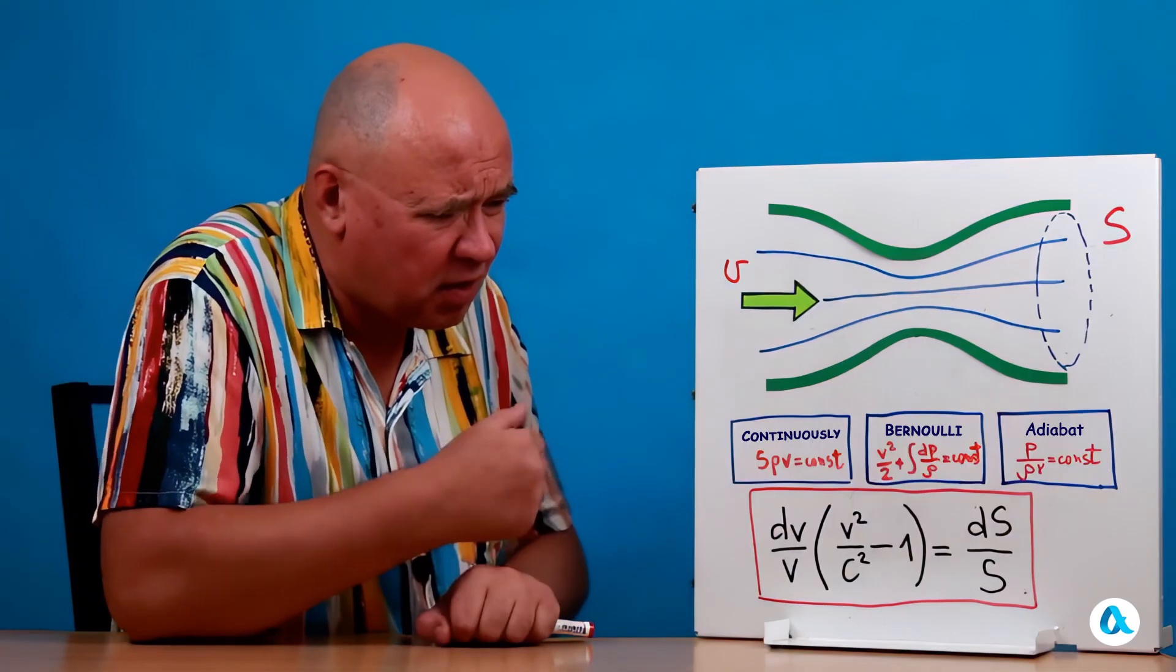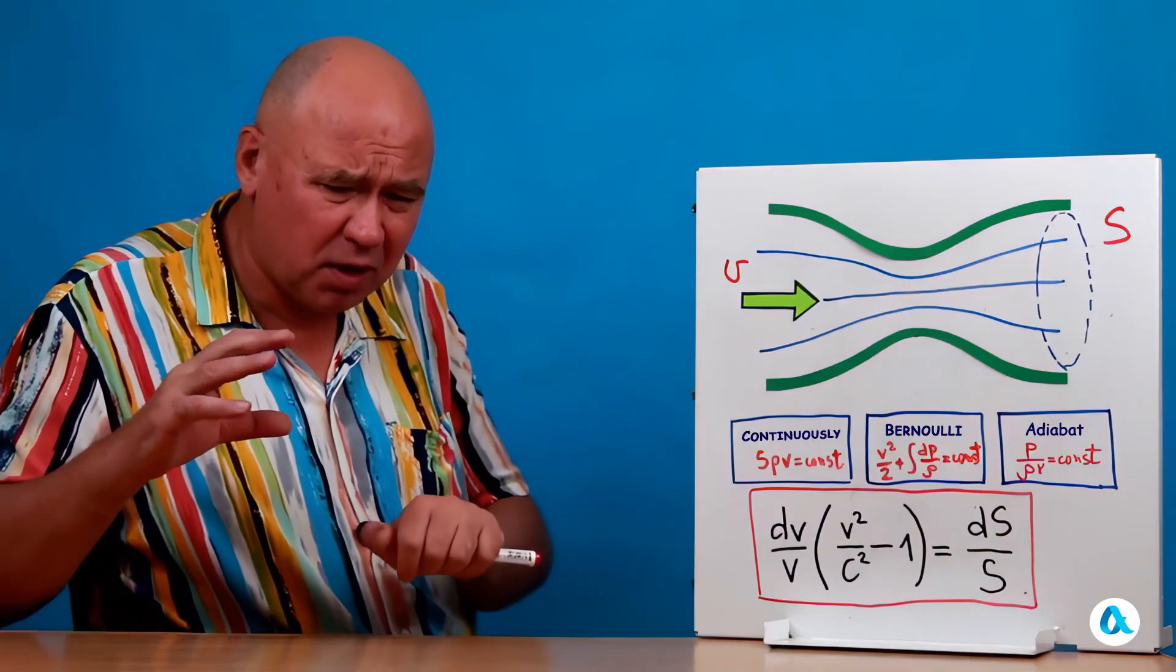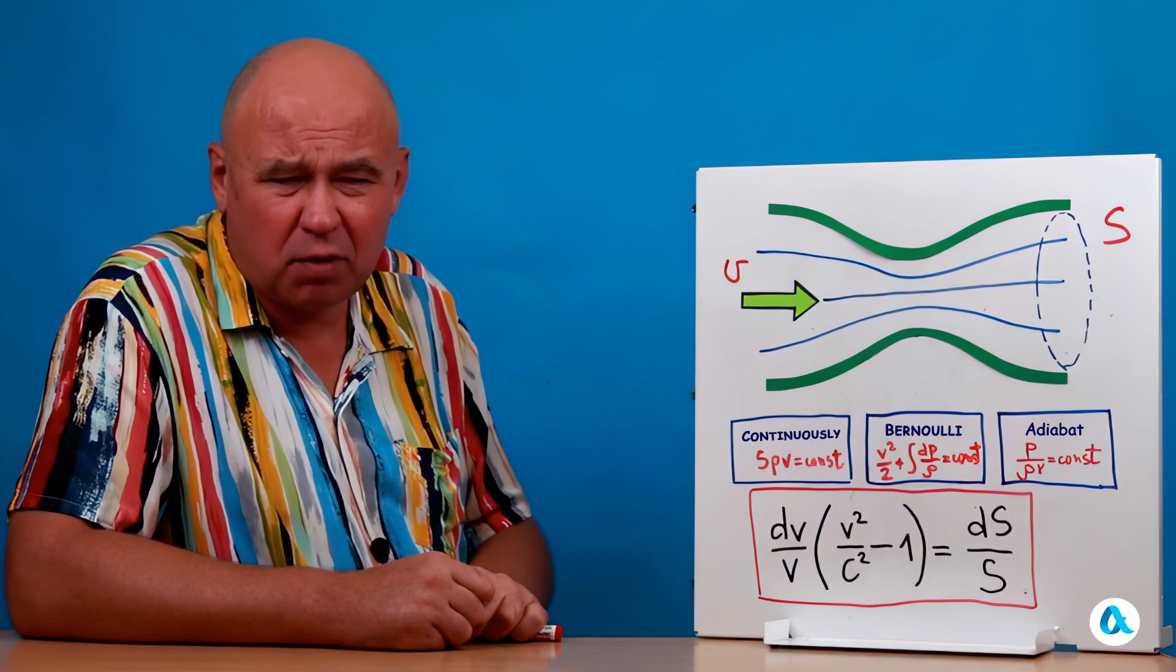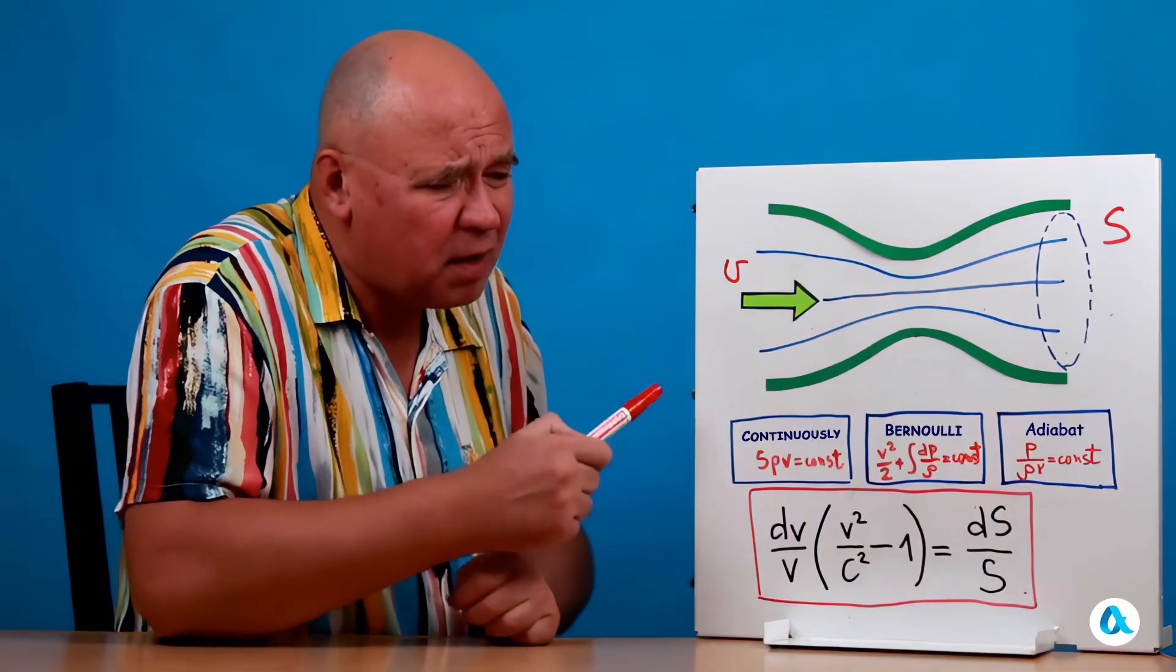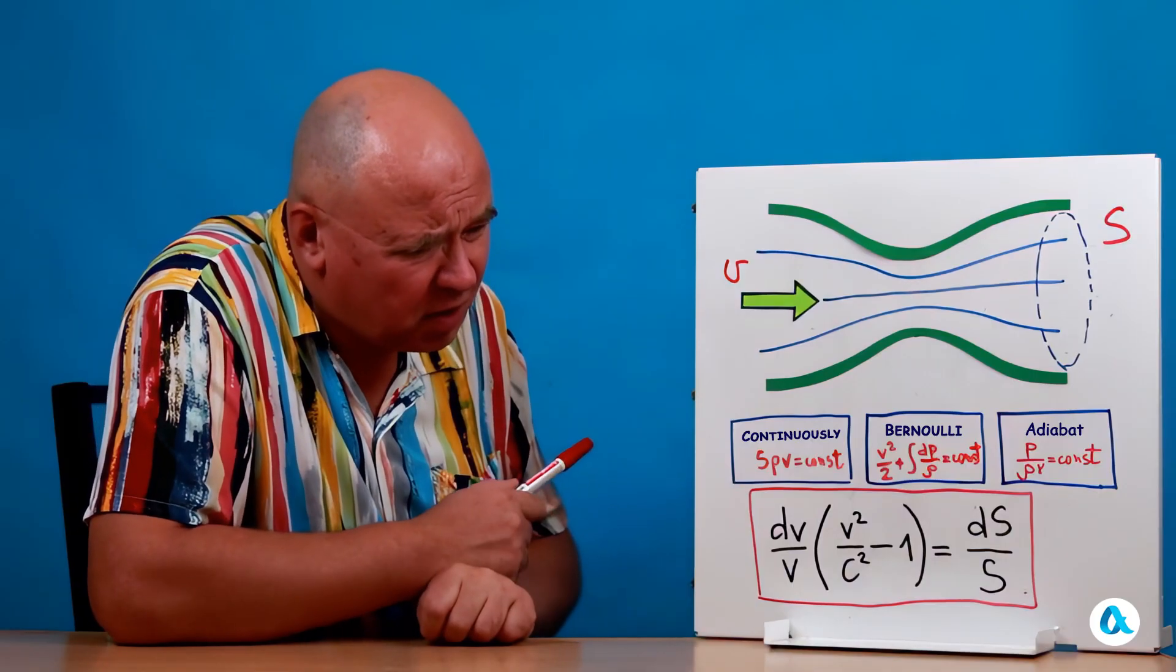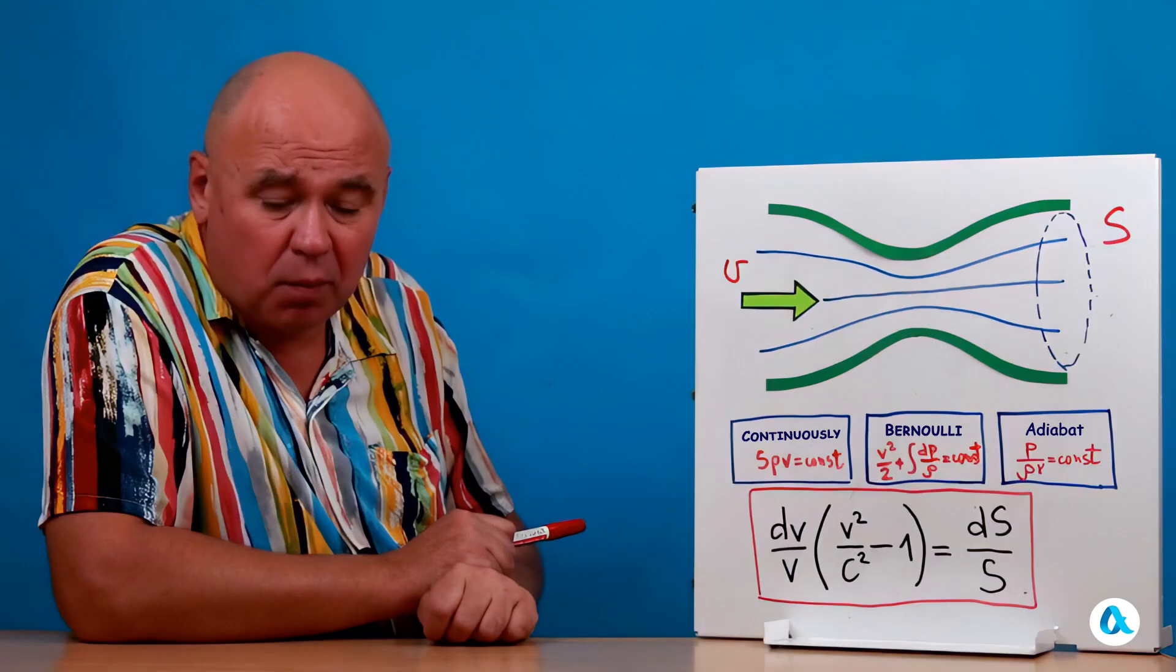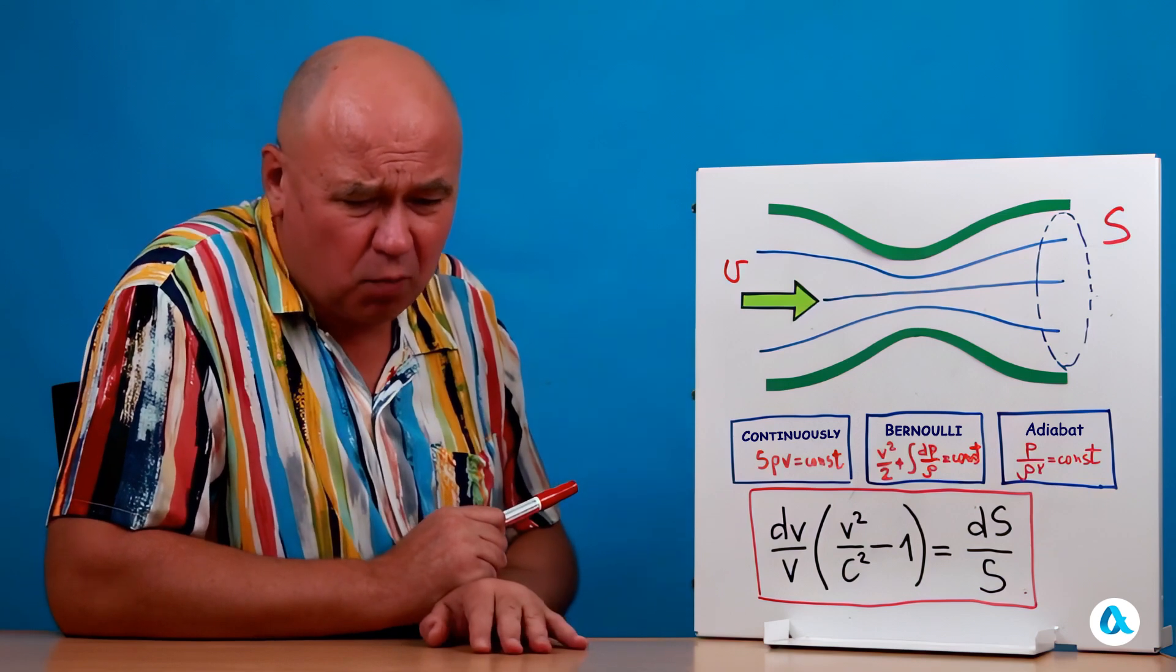Well, besides Bernoulli's equation and the continuity equation, we also need to write down the adiabatic equation. Because we assume the process is adiabatic. This gas element moving through the pipe is moving so fast that during its heating and cooling, it doesn't have time to exchange heat with neighboring elements. Everything happens very quickly. So, if we honestly write out all three of these equations, and it's better to write them in differential form, not just with constants, then we need to differentiate everything. And the constants will turn into zeros. We need to expand the differentials. Again, I'm not going to do that here. Anyone who's interested can go ahead and do it themselves or read about it somewhere. It's not that difficult.